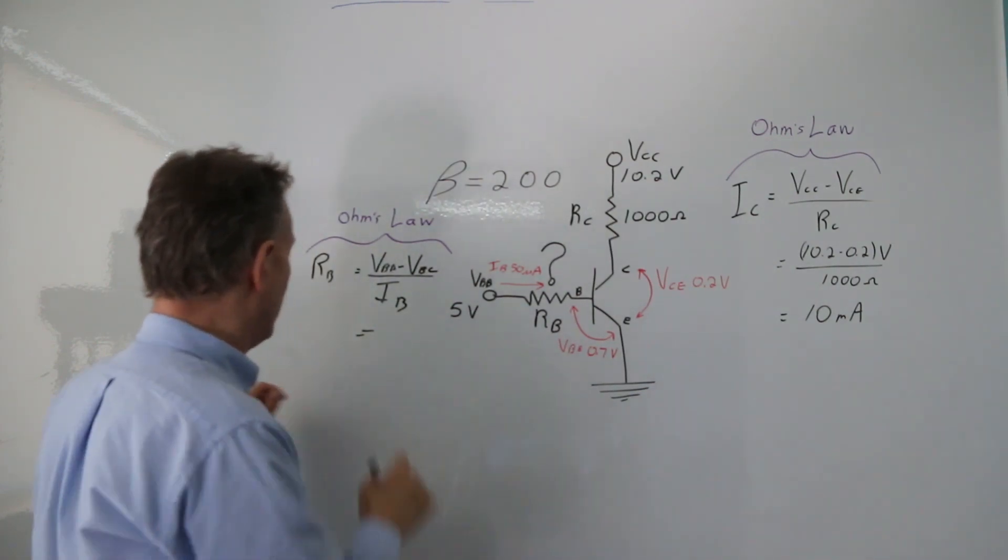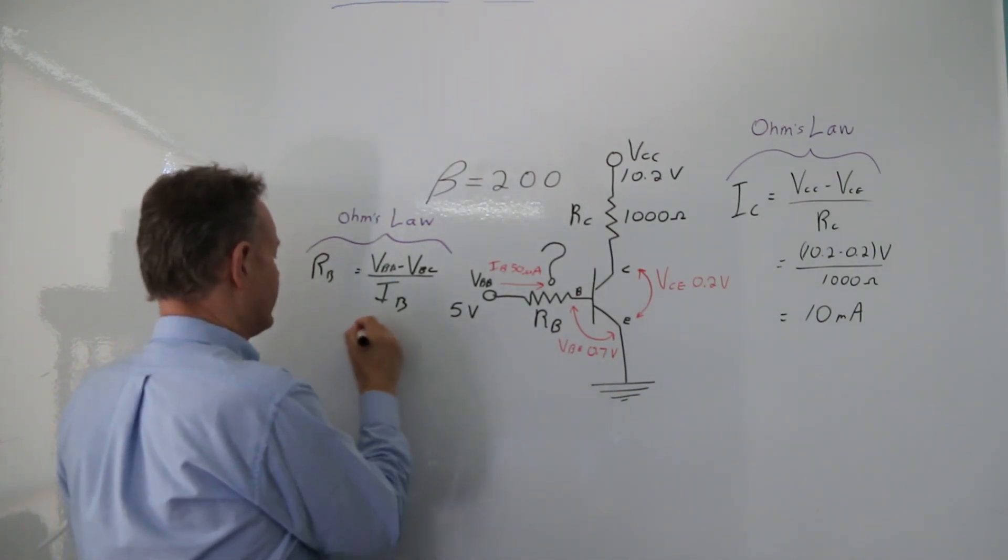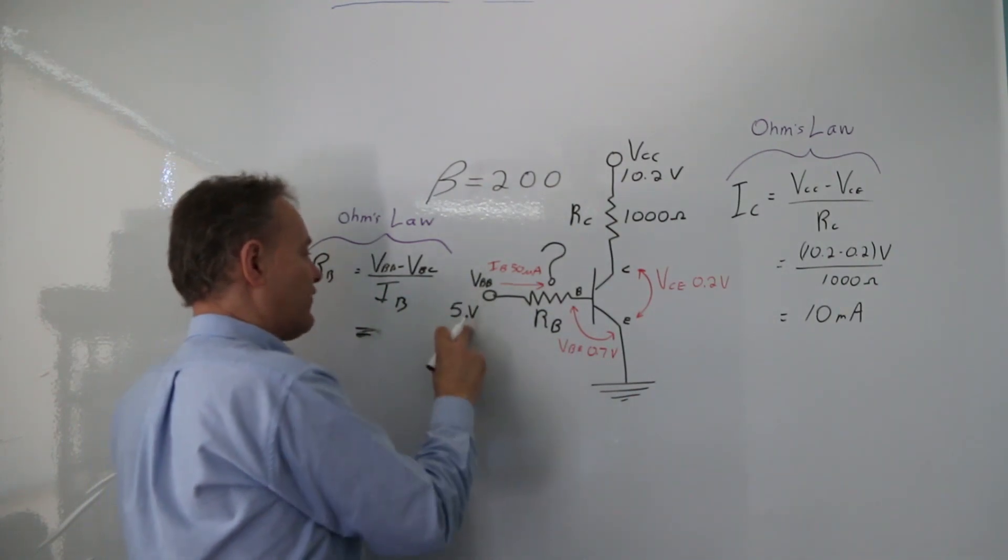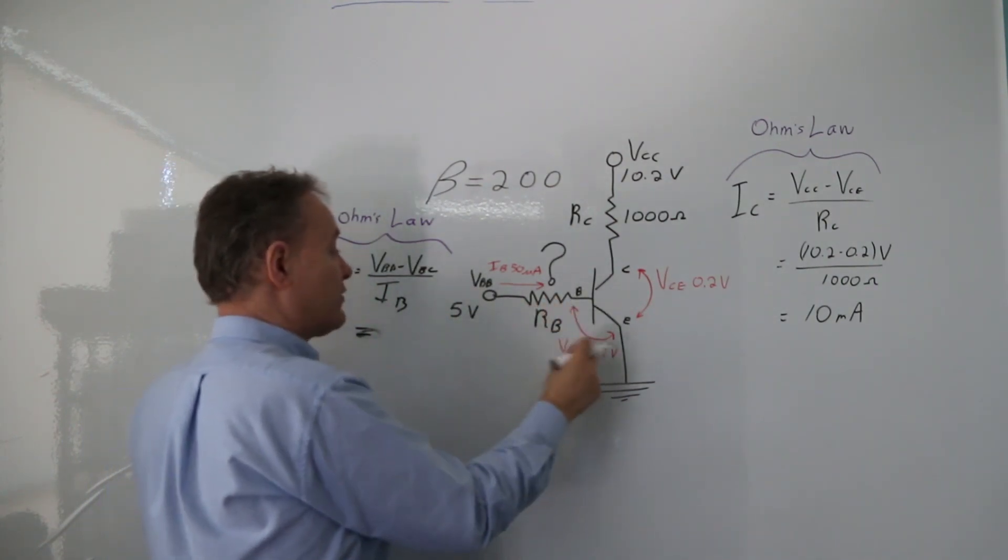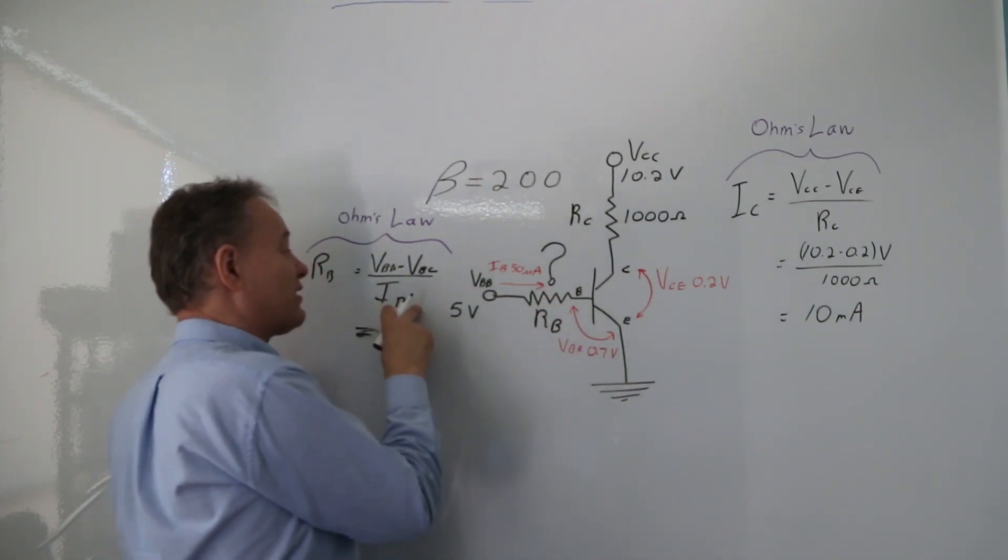And then what I'm going to do is solve this. Now I've got 5 volts, and I know that this is 0.7, and I know this because I calculated it. So that's pretty easy.